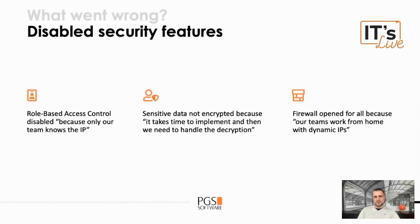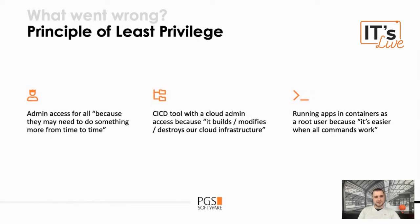Also, when working with different cloud projects, I found that many firewall security groups are open for everyone because people are using different dynamic IPs working from home, and they decided to let everyone in instead of creating a VPN or another secure connection. And last but not least, the principle of least privilege. This is the most common problem — all team members get admin access because maybe in a few months they will need to use another service. They may not need it, but they have it. So when it leaks, it gives the attacker access to everything.